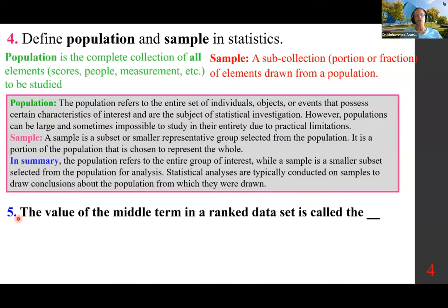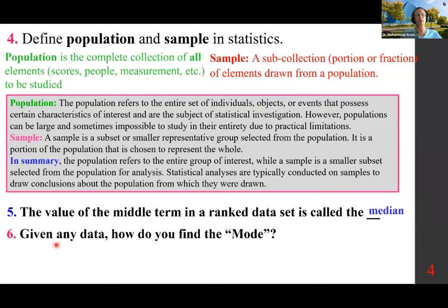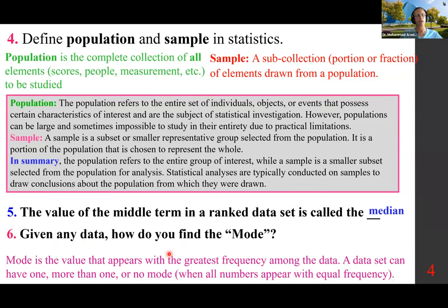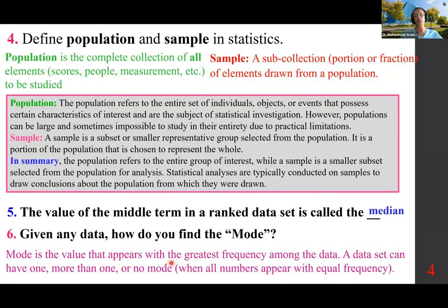The value of the middle term in a ranked data set is called the median. The mode is the value that appears with the greatest frequency among the data. A data set can have one, more than one, or no mode when all numbers appear with equal frequency.